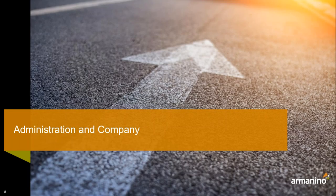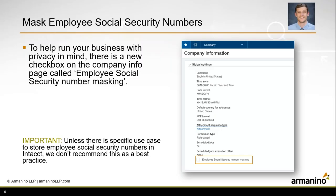First changes are in administration and company. The first change is the ability to mask employees' social security numbers — a new configuration option that was added. As shown in the screenshot, the employee social security number masking will mask all but the last four digits of the social security number in the employee record tab. We don't really recommend storing employee social security numbers in Intact unless you have a specific business use case for it. If you do, we recommend checking off this box for increased privacy.